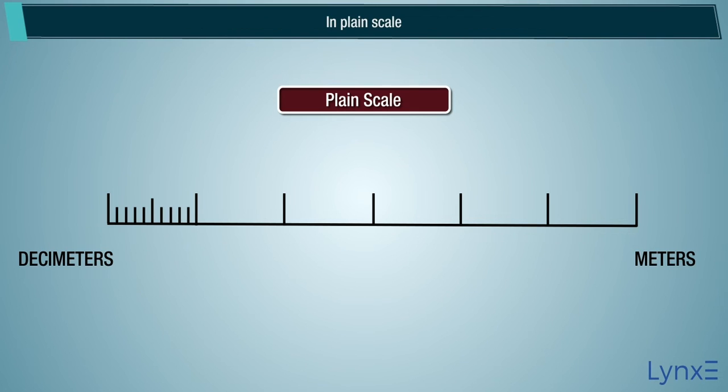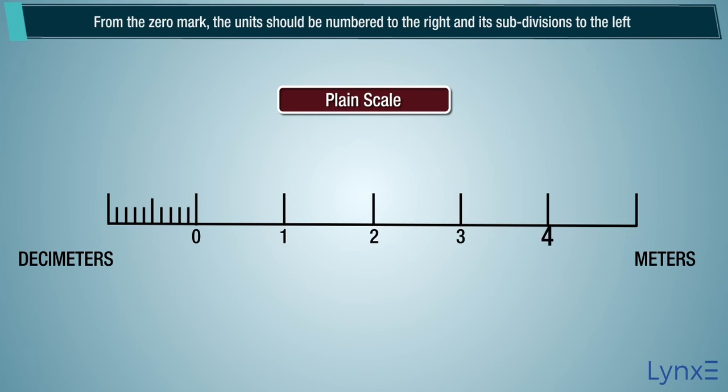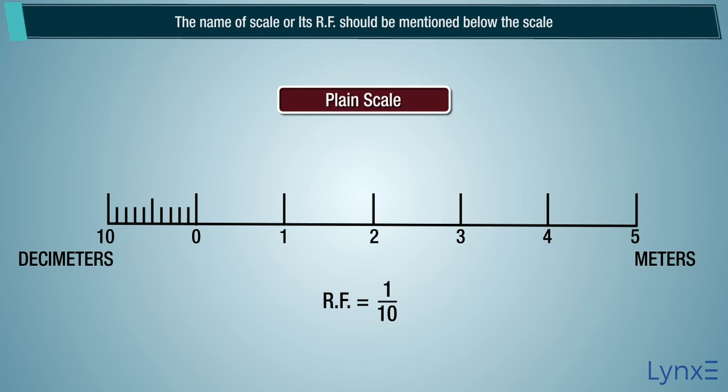In Plane Scale, zero should be placed at the end of the main division, that is between the units. From the zero mark, the units should be numbered to the right and its subdivisions to the left. The name of scale or its RF should be mentioned below the scale.